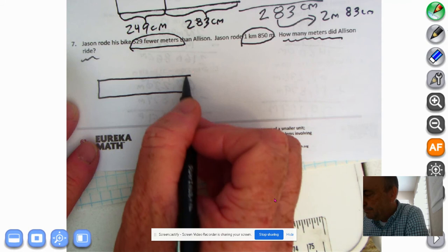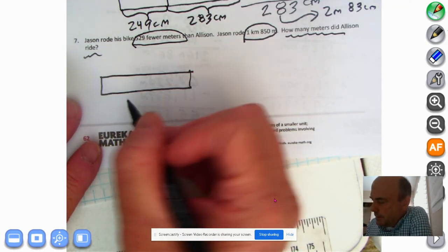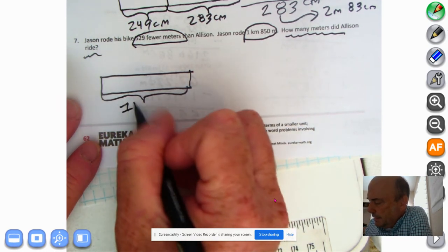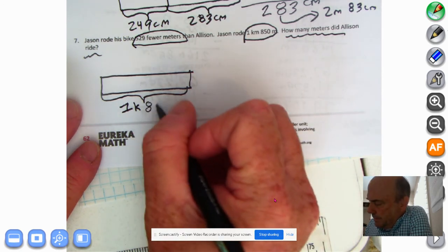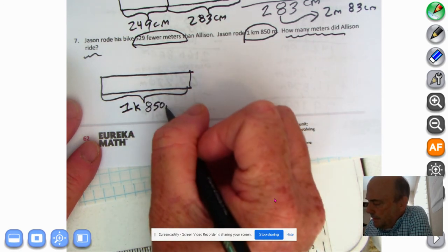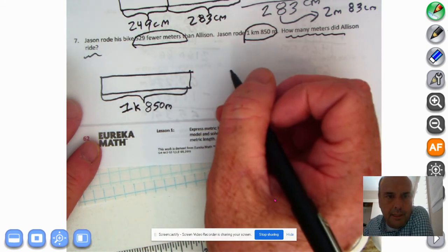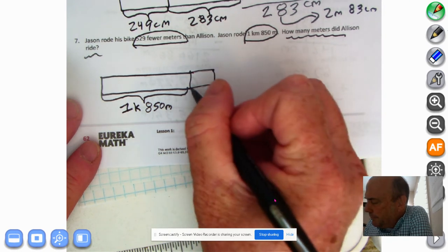Tape diagram time. 1 kilometer, 850 meters. Is that right? So one click. That's what they call them in the military. 1 kilometer, 850 meters. There's 529 fewer meters than Allison. So Allison went 529 meters farther.